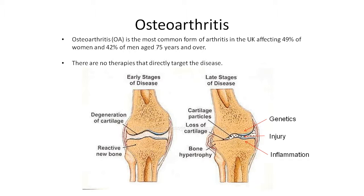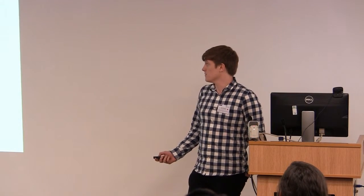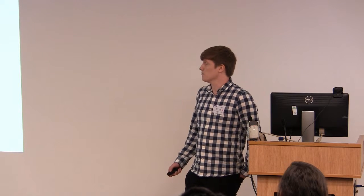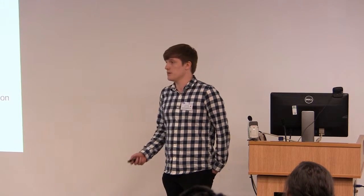As it gets worse, the bones start to rub together, causing a lot of pain. This can be caused by cartilage degeneration itself or changes in bone morphology that result in bony appendages known as osteophytes, which can break down the cartilage and also cause pain. Currently there are no therapies that directly target the disease; instead we use pain management, lifestyle changes, and diet, with the eventual endpoint being total knee replacement. Originally people thought it was a wear and tear disease, but now we know there's a genetic component, and injury at different life stages can also lead to osteoarthritis.